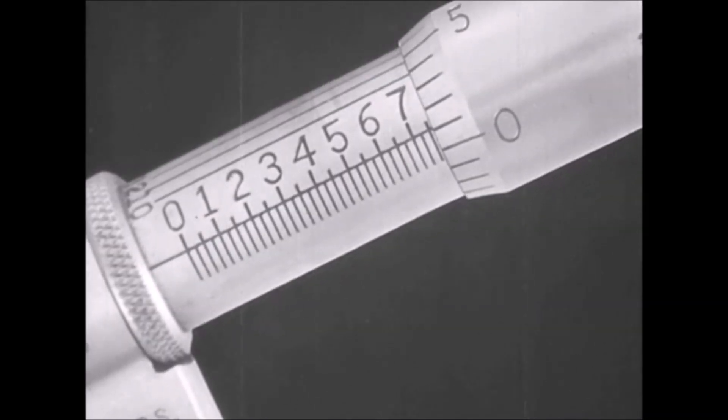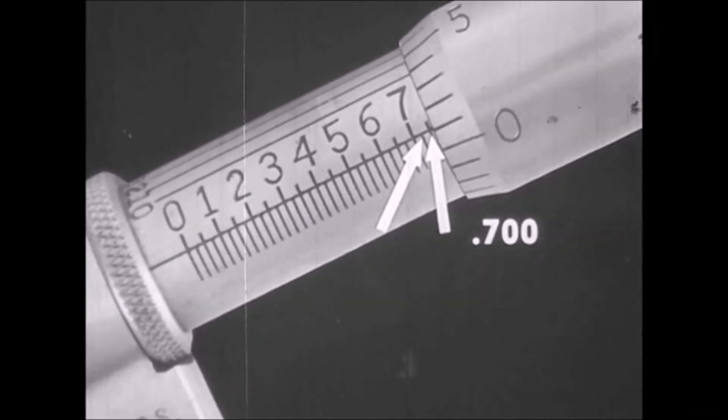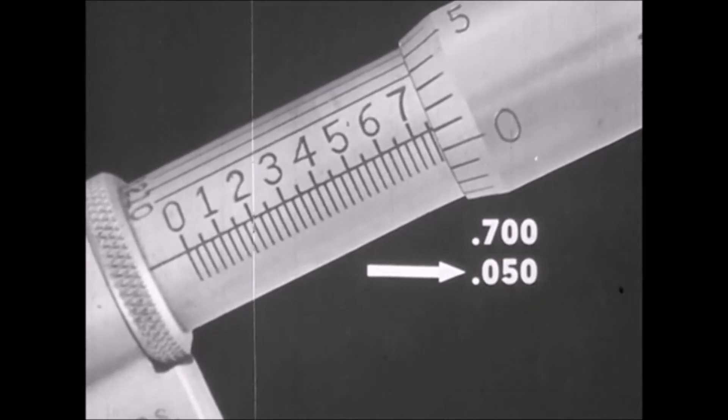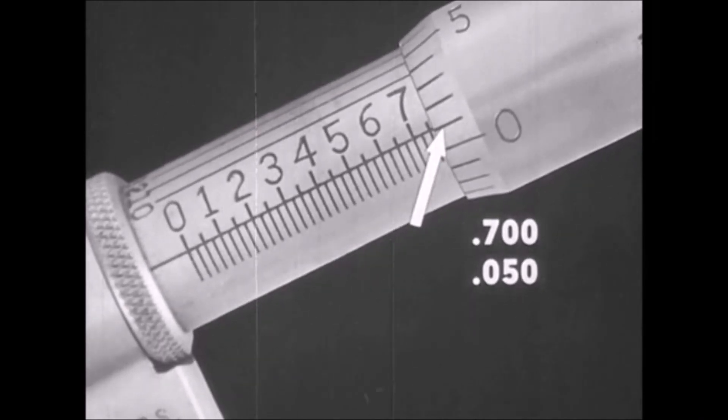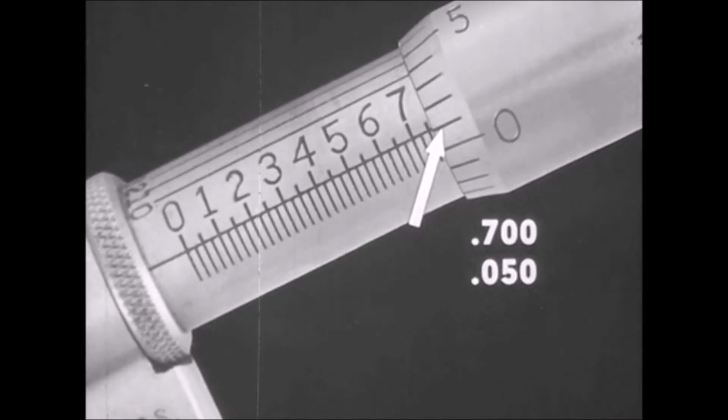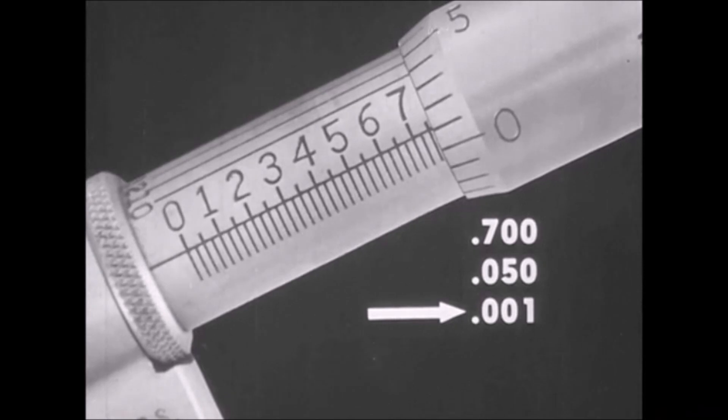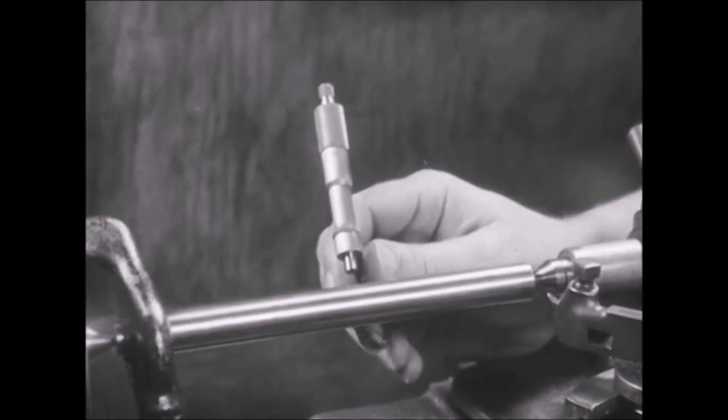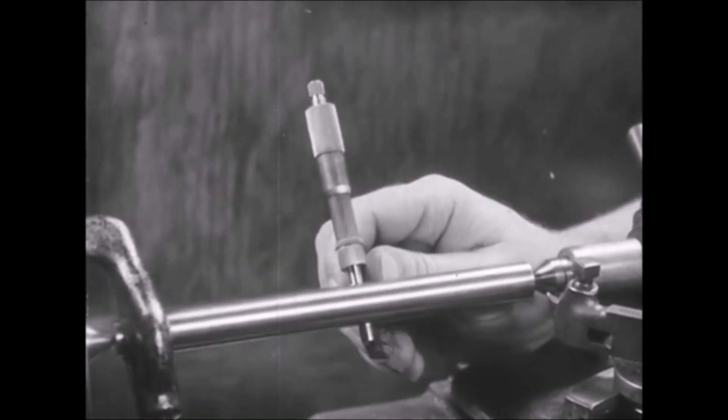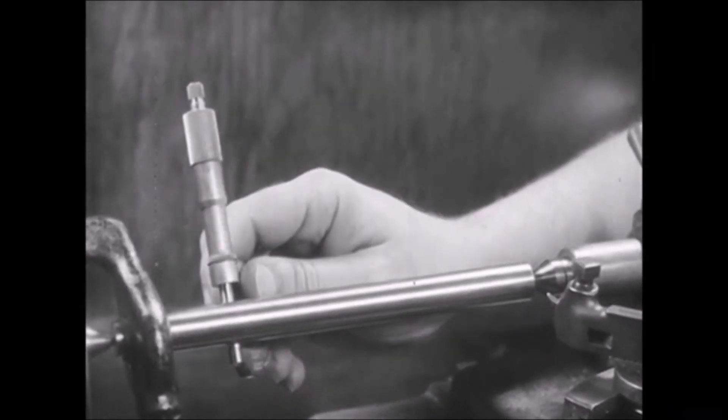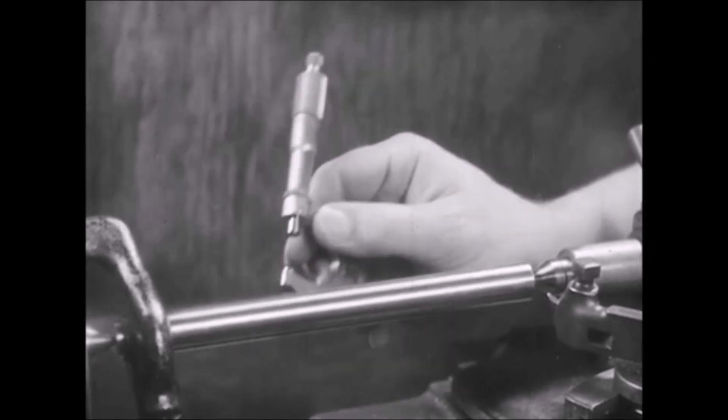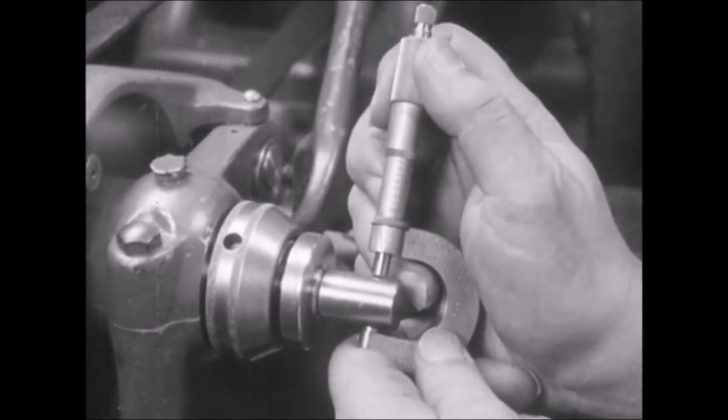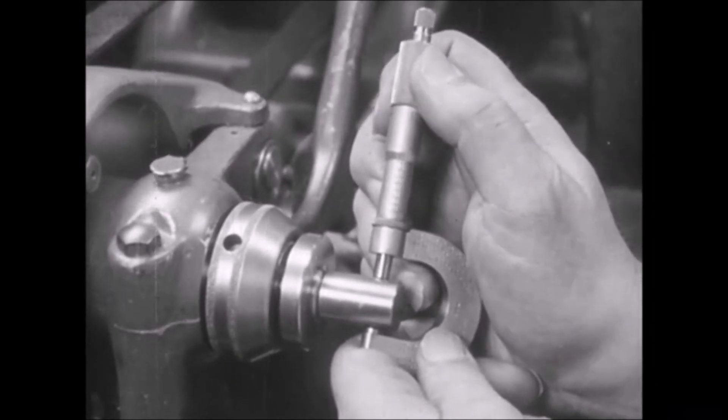The diameter of the shaft which has been measured is determined by referring first to the scale on the barrel. The figure seven indicates .700. Two more graduations are seen. That's another .050, which is .050. On the thimble scale, the number one graduation registers opposite the barrel index. That's .001. The diameter of the shaft is .751. Several places are gauged with a micrometer to check the diameter through the entire length of the shaft. The standard micrometer in experienced hands will give accurate measurements to one half of one one-thousandth or finer.